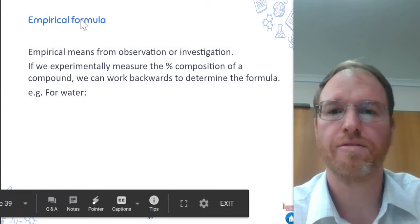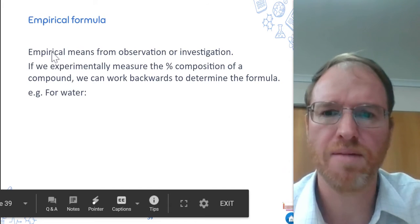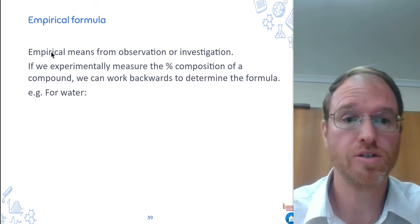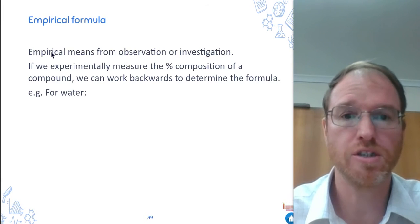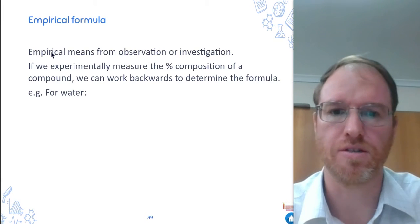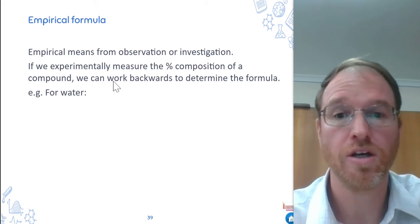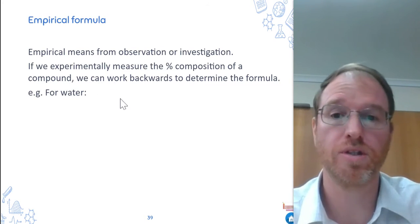What about the other way around, finding an empirical formula? Empirical just means from observation or investigation. So this is meaning what formula do we get just from analyzing the compound, doing investigations. If we experimentally measure the percentage composition of a compound, we can work backwards to determine the formula.